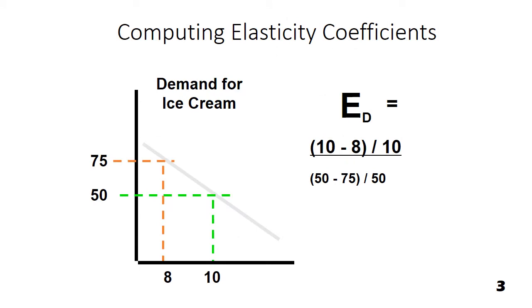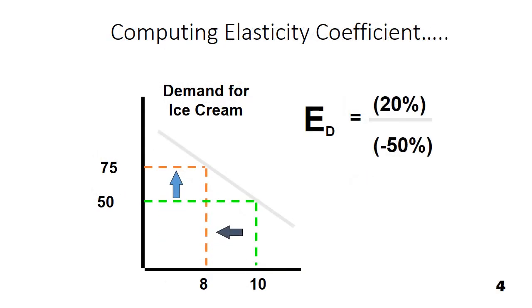So we try to calculate elasticity for this curve. It shows demand for ice cream and we have the price. Price rises from 50 rupees to 75 rupees. The demand contracts from 10 to 8. So for change in demand, we subtract 8 from 10 because demand is contracting. And for change in price, 50 minus 75 since the price is rising. Here I have the original demand and over here in the denominator is the original price. So in terms of percentage, you see that change in demand is 20 percent, change in price is 50 percent.